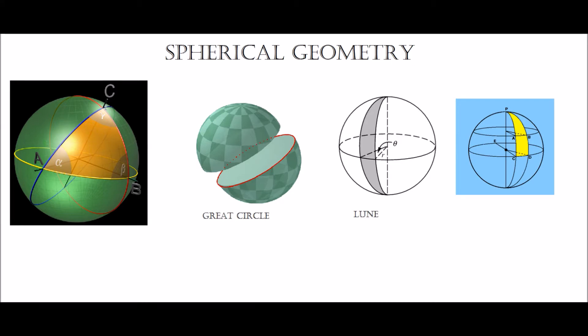First, let's get our definition of a spherical triangle straight. So in this picture, triangle ABC is a spherical triangle. A spherical triangle is quite obviously a triangle which is mapped onto a sphere, but which is bounded by three great circles. In this case, triangle ABC is bounded by the yellow great circle, the red great circle, and the blue great circle.